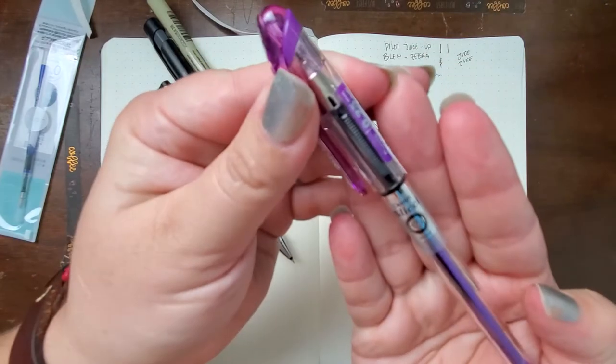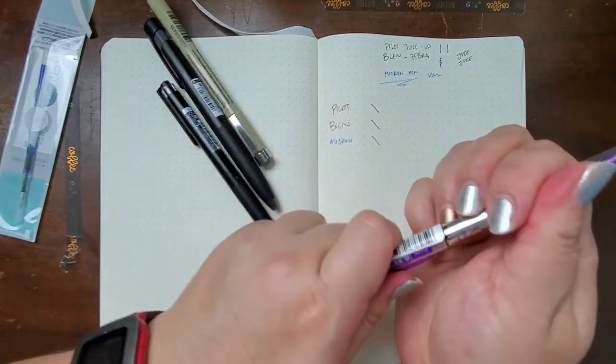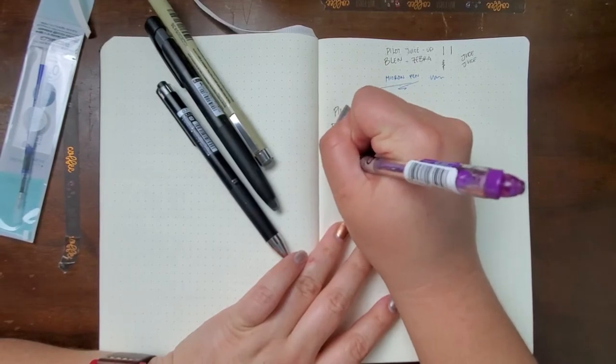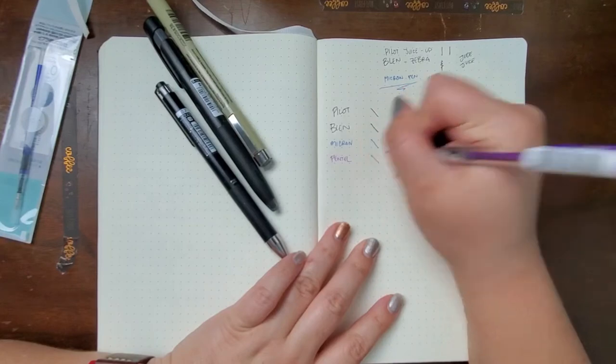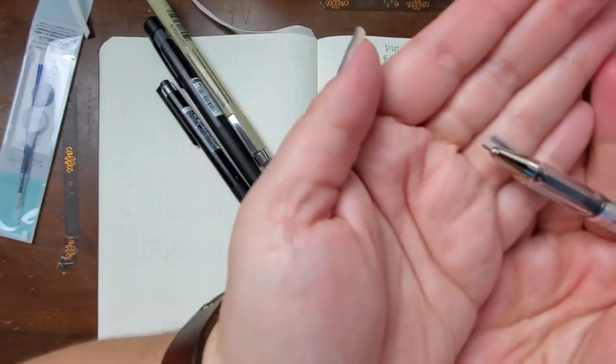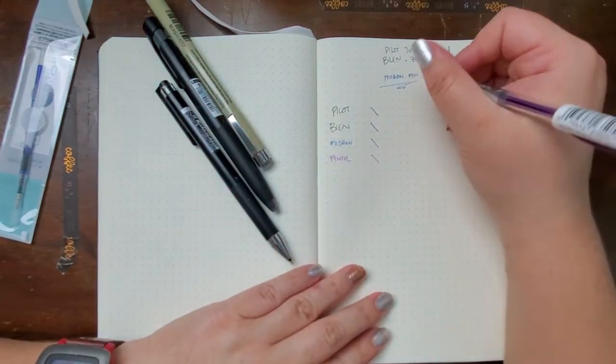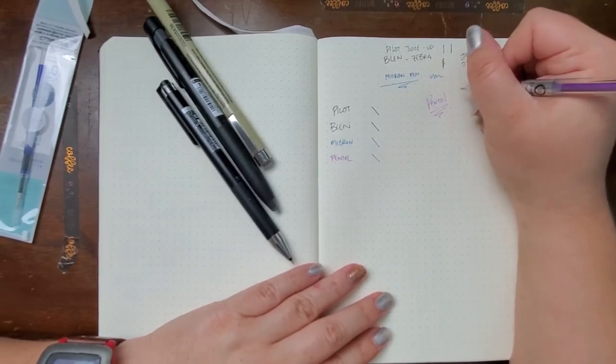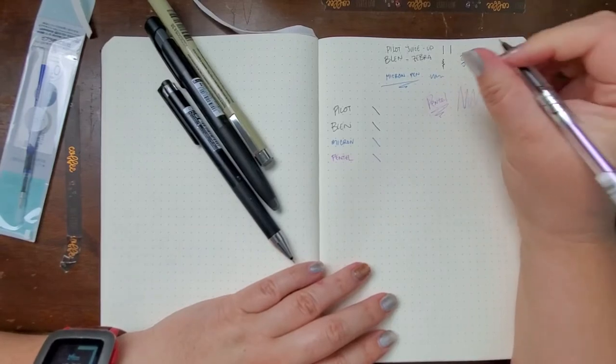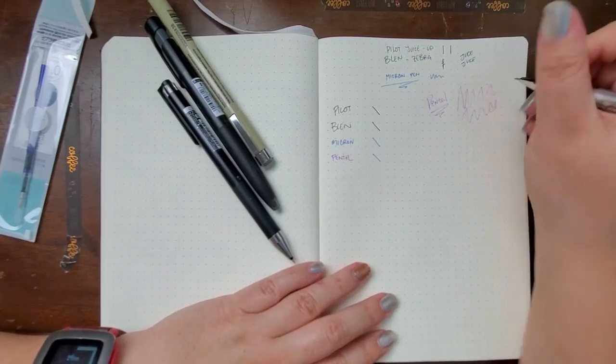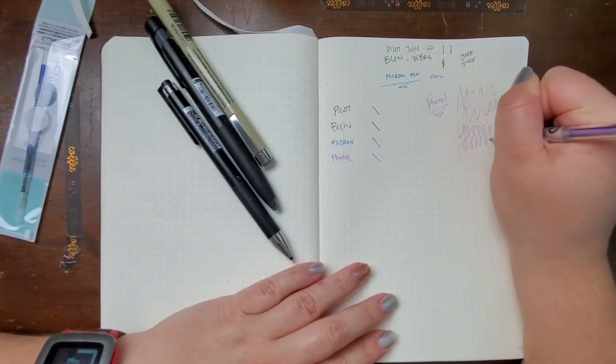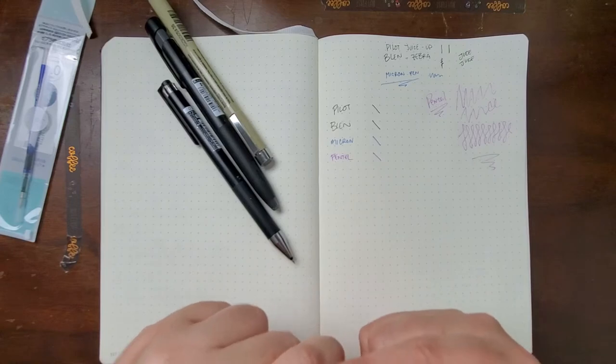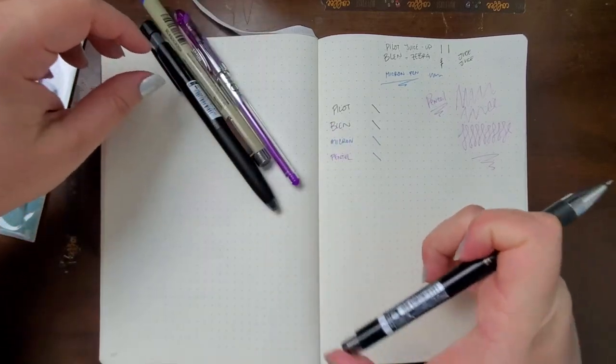And then the last one that I got is this Pentel Slicky. It's a gel 0.25 gel pen. And it has the same problem as the Pilot where this needle point just feels kind of shaky. But I really like how thin it is. And I think some people might be mad that sometimes it feels like it's not coming out. That doesn't actually bother me. I like a variation in sort of line and what the ink is doing, the flow, etc. So this one is in the running for maybe being a pen that I can work with and replace this guy.